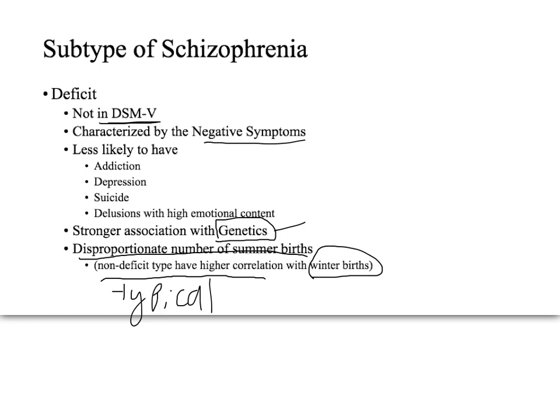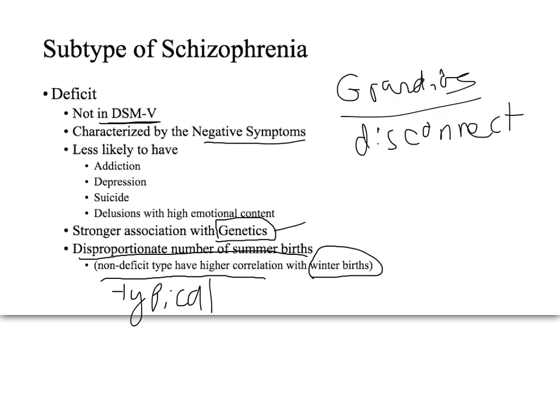My little brother has both positive and negative symptoms — a grandiose vision of who he is and a disconnected world, but also negative features like smoking, lower activity, and flat speech affect. This places him in what would be considered a typical type, correlated with environmental factors.